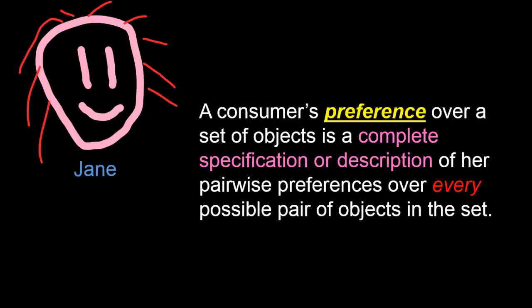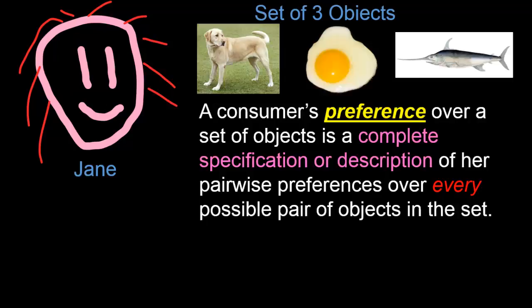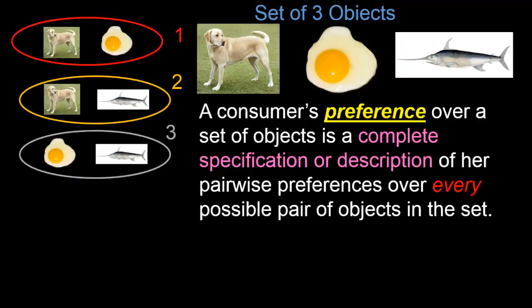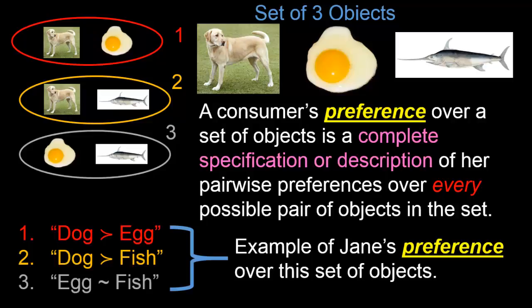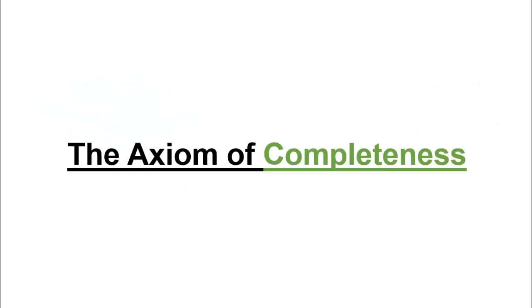We considered the example of Jane, who was facing a set of three objects. From this set of three objects, we could form three possible pairs. We gave an example of Jane's preference: she strictly preferred dog to egg, strictly preferred dog to fish, and was indifferent between egg and fish. This complete specification of pairwise preferences over each of the three possible pairs is precisely an example of her preference over this set of objects.